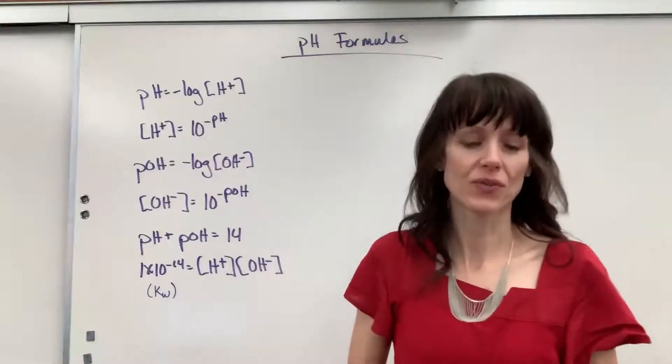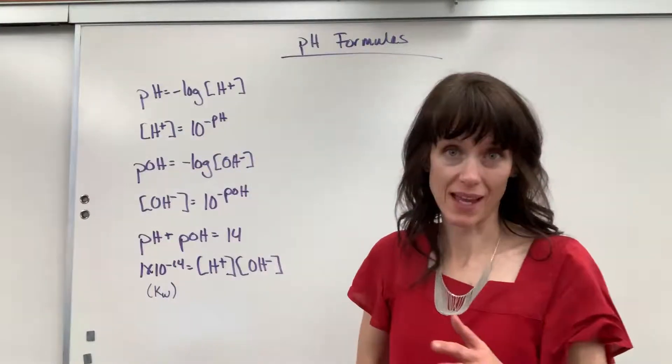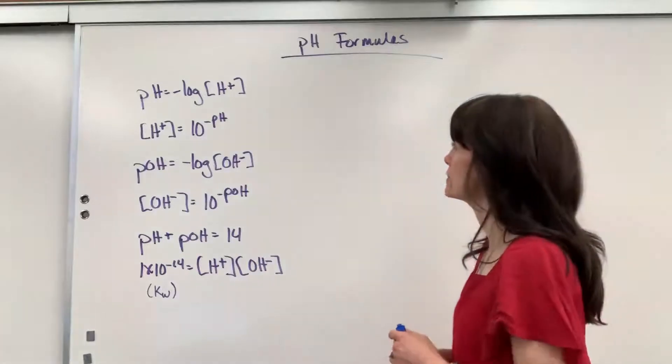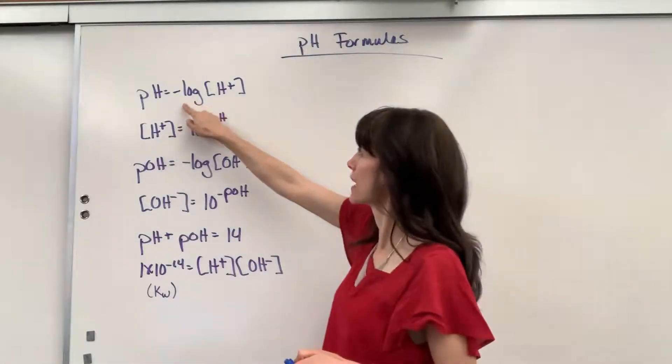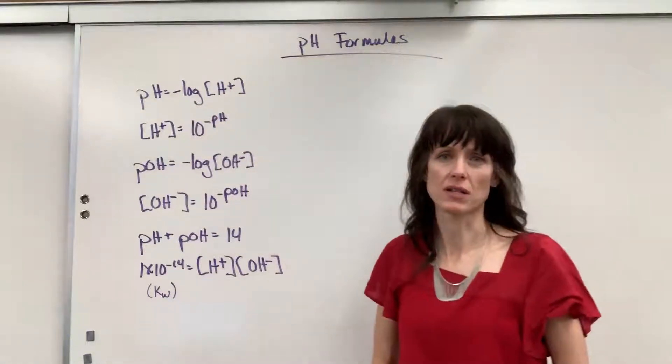Let's take a look at the six formulas that you can use with pH directly. Here is the one that you're going to see the most: pH equals the negative log of the hydrogen concentration.